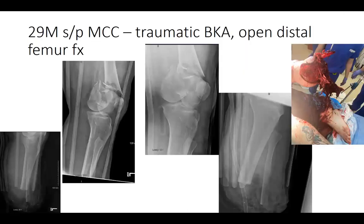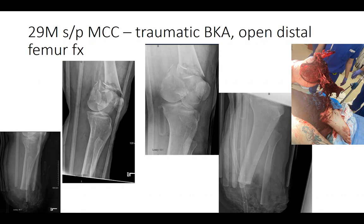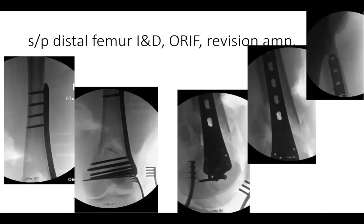Next is a 29-year-old male involved in a motorcycle collision with a car that ran a red light. He sustained a traumatic below-knee amputation and a Gustilo-Anderson 3A open distal femur fracture. He was taken emergently to the operating room for completion of the BKA and I&D of the distal femur, then taken back two days later for a repeat washout, revision amputation, and ORIF of the distal femur.